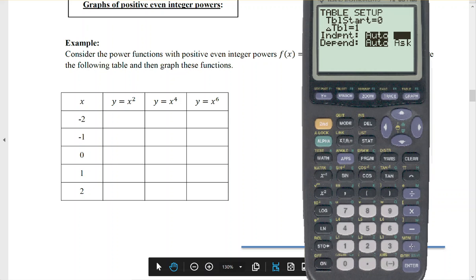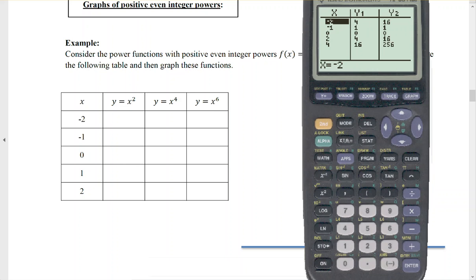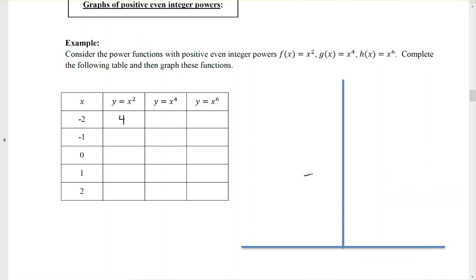I can go into the table, so do second, graph, and I can type in my own numbers. I've already done that here. I've typed in the negative 2, and in y sub 1, that was my x squared term. So negative 2 squared is my number 4. And then negative 2 to the 4th, that was my 16. And negative 2 to the 6th, positive 32.